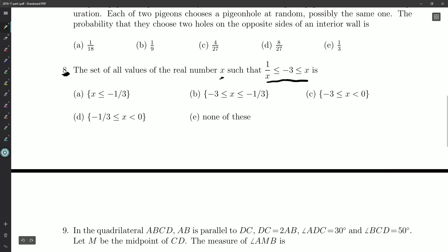Okay. So we've got sort of a two-sided inequality here. 1 over x less than or equal to negative 3 less than or equal to x. What I can do is break these down into two different parts. So, 1 over x less than negative 3, and negative 3 has to be less than or equal to x.